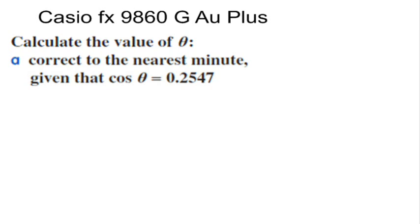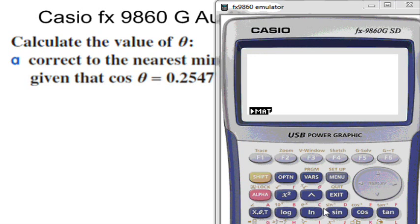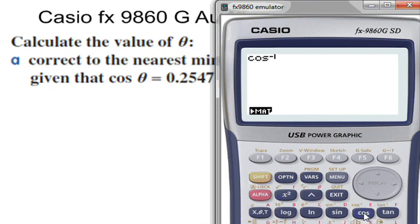In this video I'll look at how to use the calculator to get an answer in degrees, minutes and seconds. So I need to work out inverse cosine of 0.2547 and that'll give me an answer in degrees of 75.244 etc degrees.